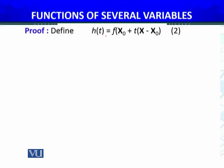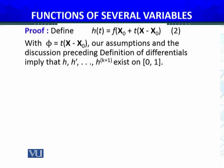We define h. h is a function of one variable: h(t) equals f(x_0 + t(X - x_0)). This is actually the line segment: x_0 + t(X - x_0). With φ equals t(X - x_0). Our assumptions and the discussion preceding definition of differentials imply that this is in fact a composition function. f is a function of several variables, and φ is t(X - x_0) which I defined. Remember the motivation for differential definitions: h, h', ..., h^(k+1) - these all exist by hypothesis.